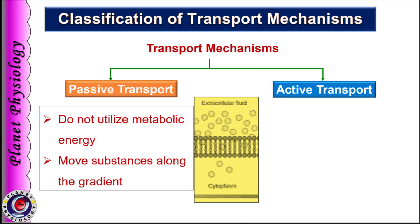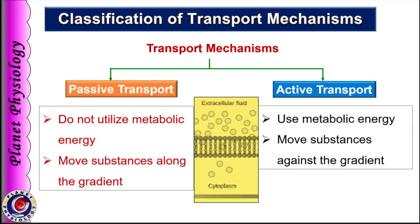In contrast, active transport utilizes metabolic energy to carry substances across the cell membrane because they transport substances against the gradient, that is from low concentration to high concentration. Now let us study the various types of passive transport.